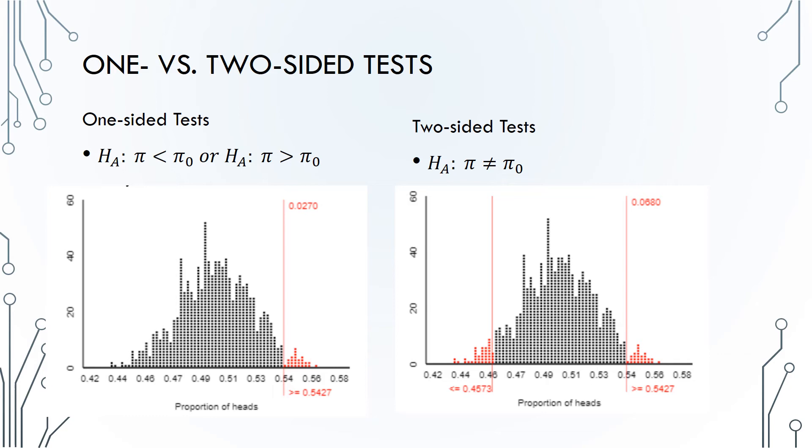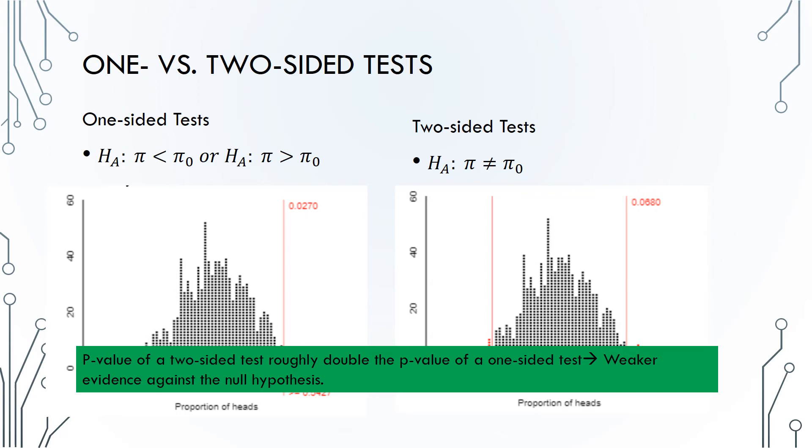In fact, the p-value of a two-sided test is roughly double that of a one-sided test, as long as the observed statistic is in the direction of the alternative hypothesis. Larger p-values indicate weaker evidence against the null hypothesis.